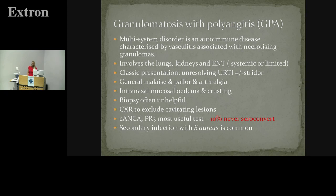GPA is probably the most common, formerly known as Wegener's. Wegener was a signed-up member of the Nazi party until 1935, so we're no longer allowed to use his name. It's a granulomatous condition with polyangiitis that typically presents first in the ENT regions of the head and neck. It often affects the lungs and kidneys. They present with upper respiratory tract infections, stridor, malaise, pallor, arthralgia, and nasal crusting. C-ANCA: about 90% eventually seroconvert with extensive disease, but in the early stages they're often C-ANCA negative, and they frequently get chronic secondary infection with Staph aureus.